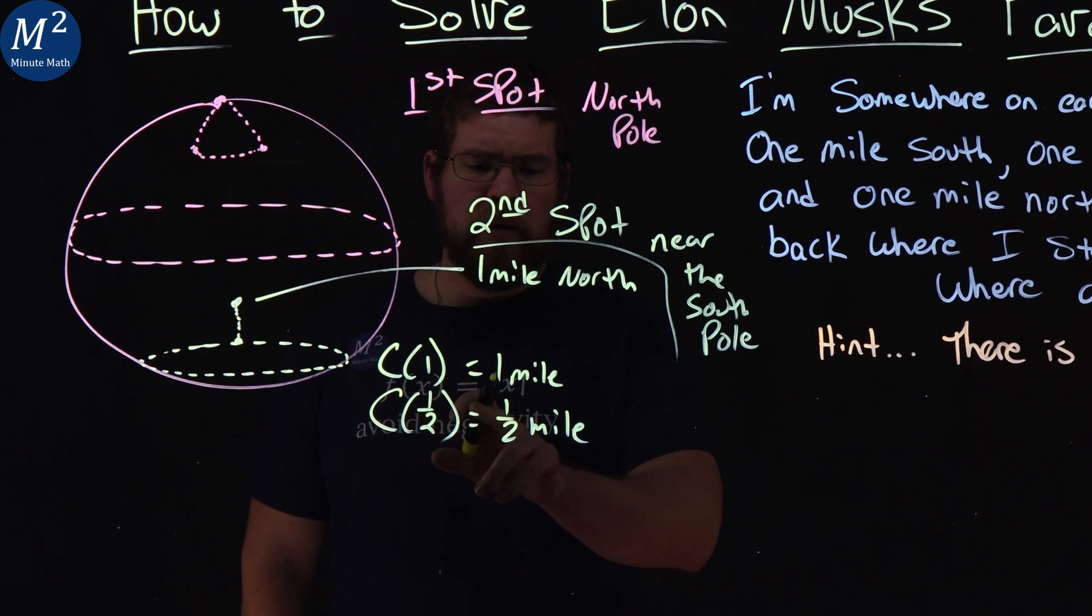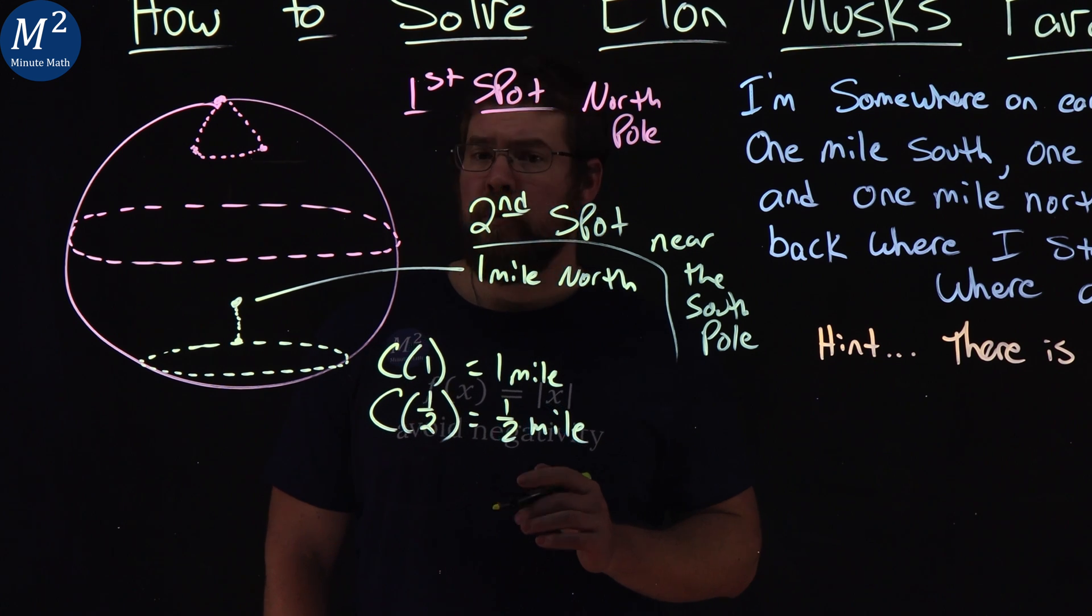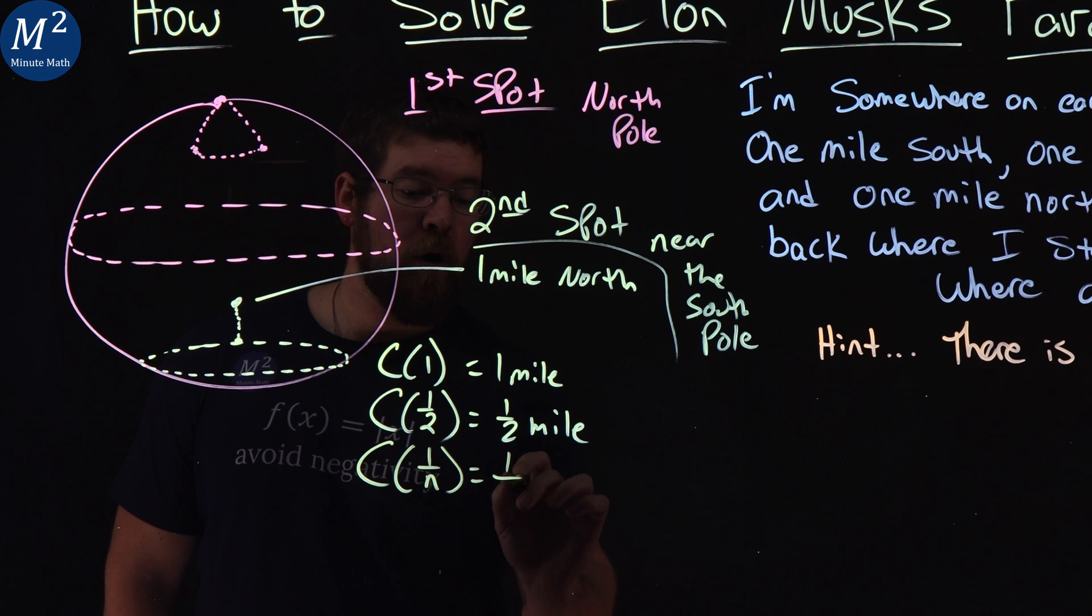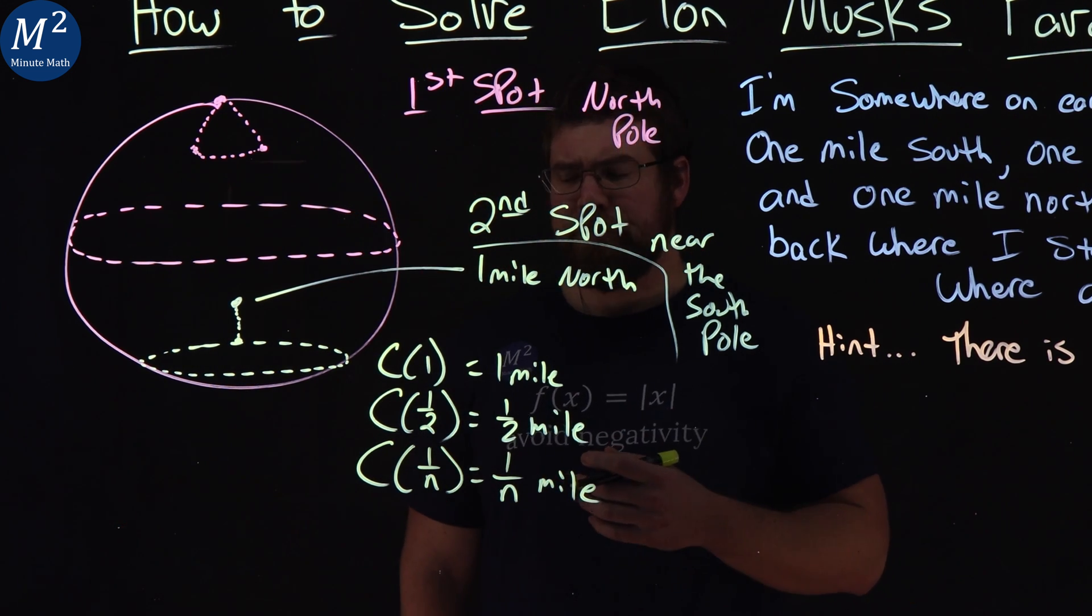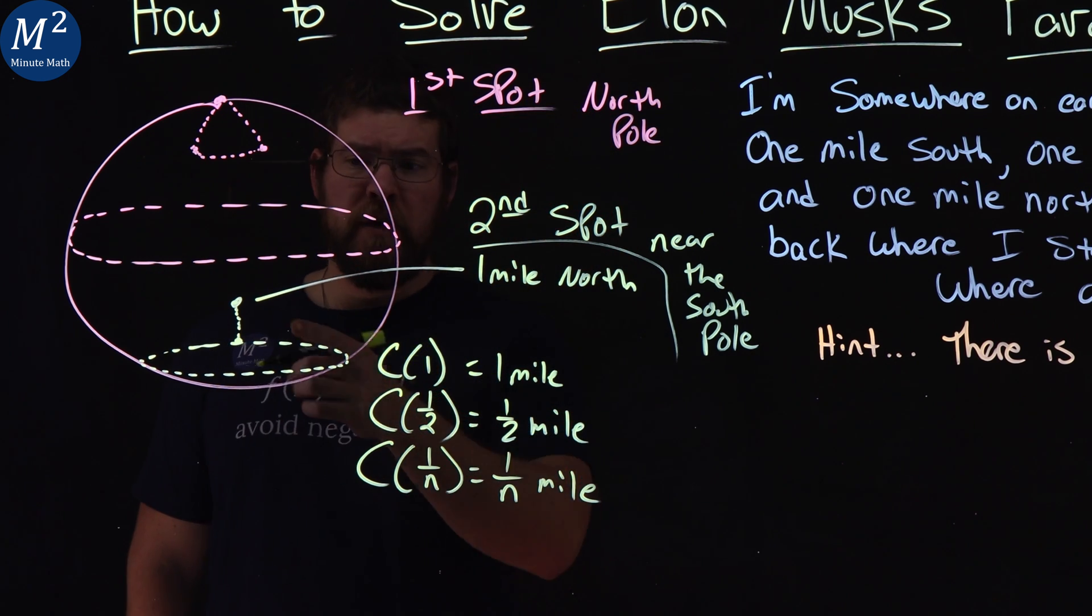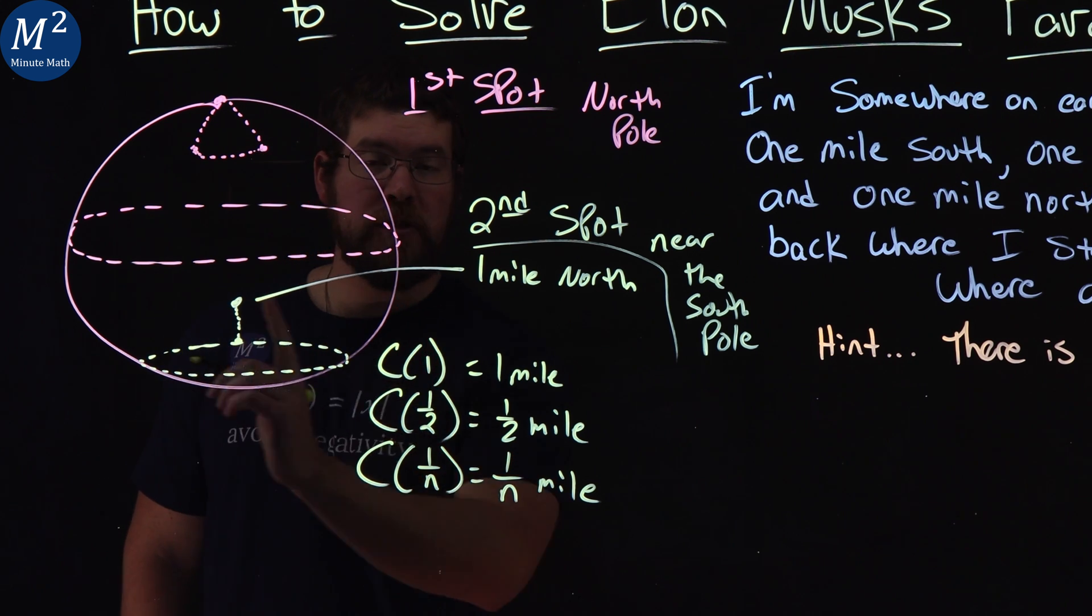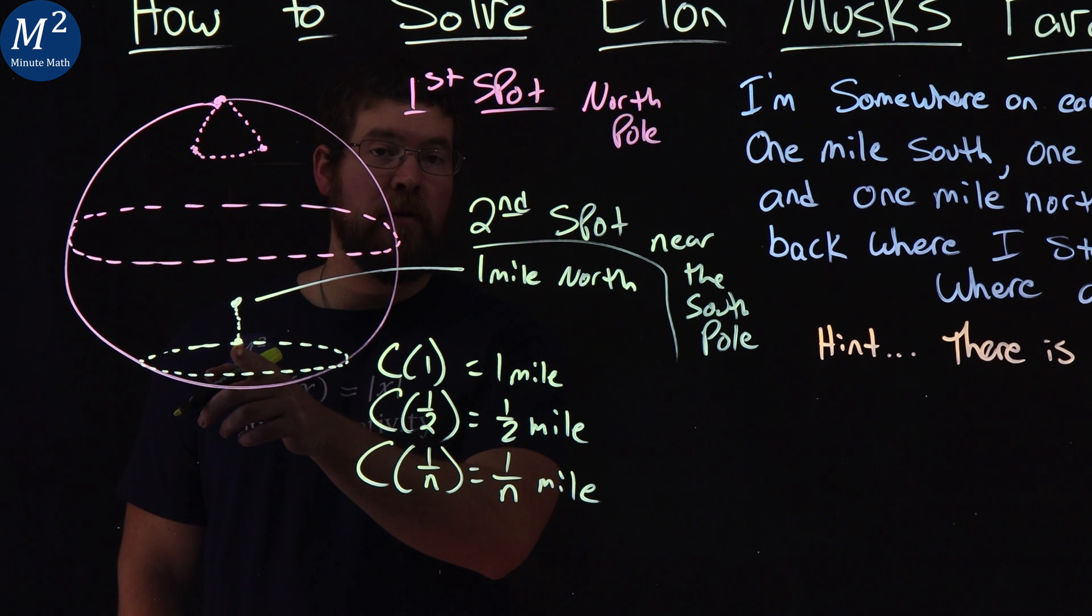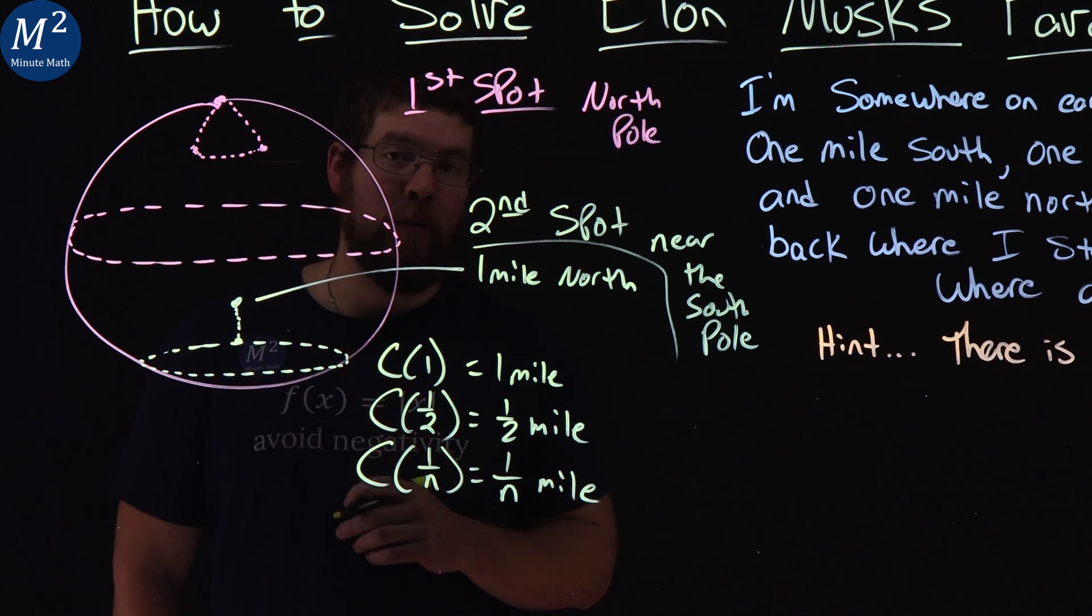Well, it works for one mile and one half mile of a circumference. What about one over n? So circumference of one over n mile, where n is a whole number. And that one, well, if it's three or five or whatever it is, we go down one mile from there. We have to do n many rotations west, which will bring us back to our original spot where we hit the circumference, and then we go back up north to that one spot we had.